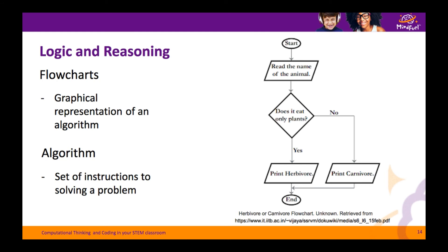As you look at this flowchart, there is an improvement that could be made. One thing to remember when testing a flowchart is that regardless of what the input is, we should be reaching an output that makes sense to answer the problem. For example, if the input is a bear and the question asks does it eat only plants, we know the answer is no. In this case, the flowchart will print carnivore — however, that's not true. We know bears are actually omnivores. So we should have another decision or option present in this flowchart.